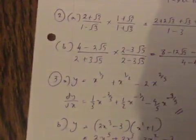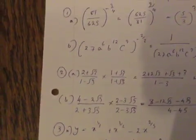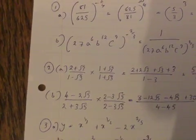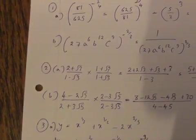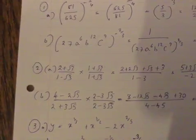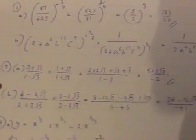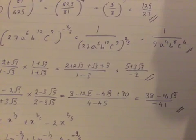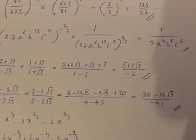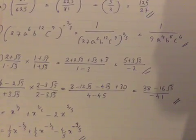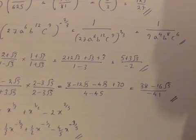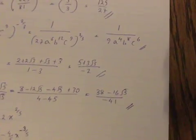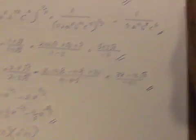Question 2b: (4 - 2√5) over (2 - 3√5), which gives 8 - 12√5 - 4√5 + 30 over 4 - 45, which is 38 - 16√5 over minus 41.